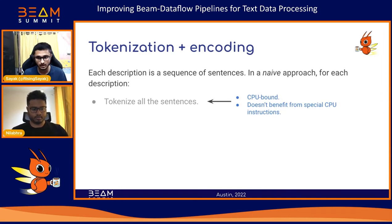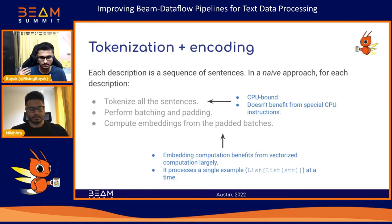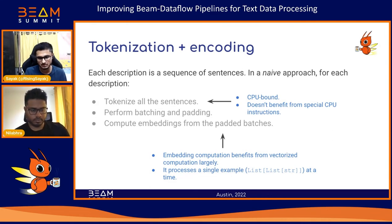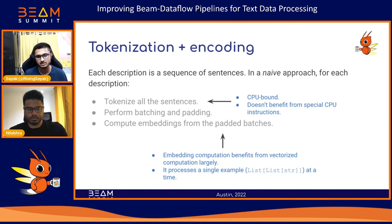The problem is that tokenization is a fairly CPU-bound process and does not benefit much from special CPU instructions like AVX-512. On the other hand, generating embeddings actually benefits largely from vectorized computation. When converting all sentences of a particular sample, it essentially becomes a list of lists with a global batch size of just one, which is not computationally efficient. Furthermore, we are fusing tokenization and embedding generation into a single step, whereas clearly both utilities have different computational needs, leading to computational waste.